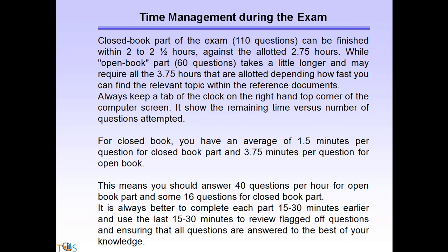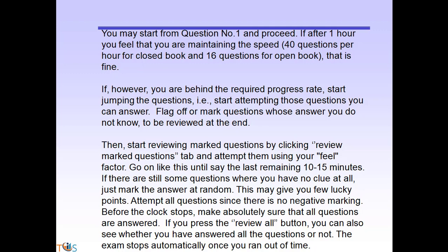It's always better to complete each part 15 to 30 minutes early and use that time to review flagged questions, ensuring all questions are answered. There is no negative marking. Start from question one and proceed. After one hour, check whether you are maintaining the required pace — 40 questions per hour for open book, 16 for closed book. If you are behind, start skipping questions that are taking too much time, flagging them and moving on.